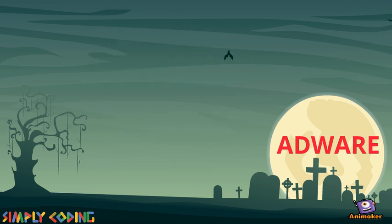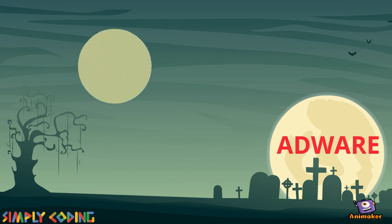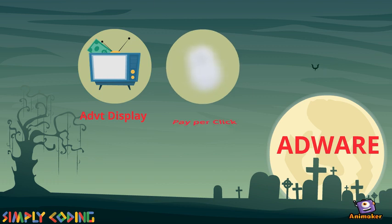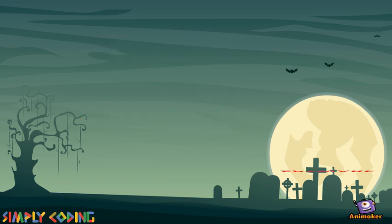It may generate two types of revenue for its owners: one is for the display of the advertisement, and the other is on a pay-per-click basis if the user decides to click on the advertisement. It could sometimes lead you to download spyware.